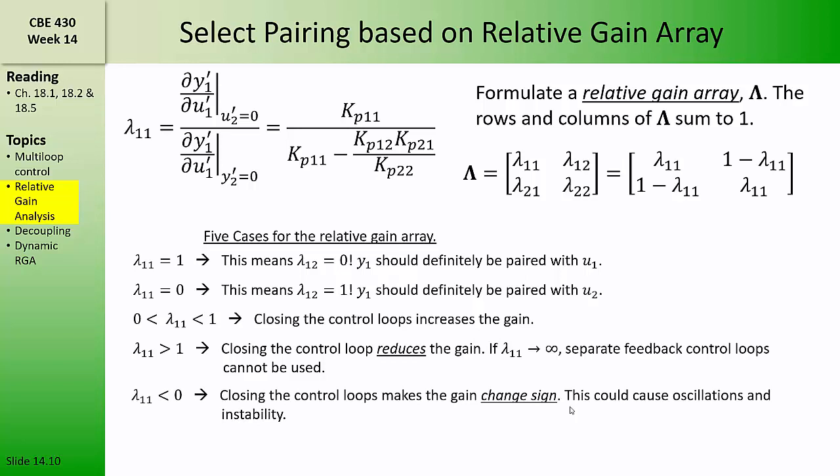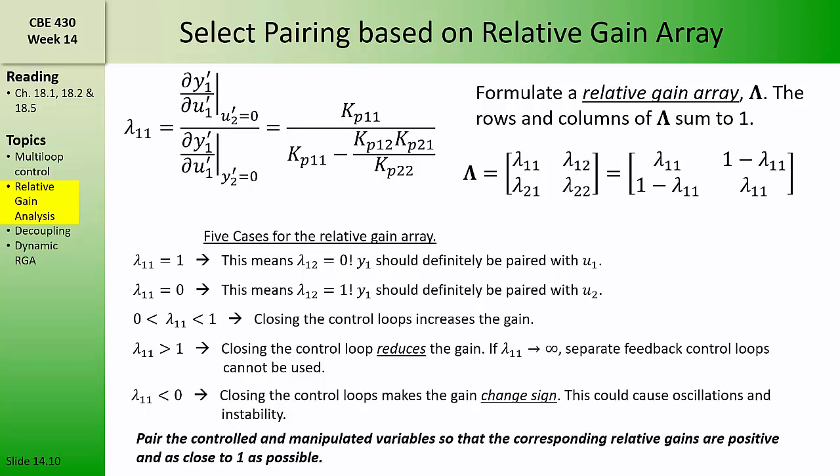If lambda11 is less than zero, then closing the control loops causes the gain relating manipulated variable one to controlled variable one to change sign. Relative gains less than zero indicate that there could be oscillations and instability in a control configuration using that manipulated variable-controlled variable pairing. So when choosing a control loop configuration, it's best to pair controlled and manipulated variables so that the corresponding relative gains are positive and as close to one as possible. The control configuration is selected by choosing one relative gain from each row and column of the relative gain array that is positive and as close to one as possible.